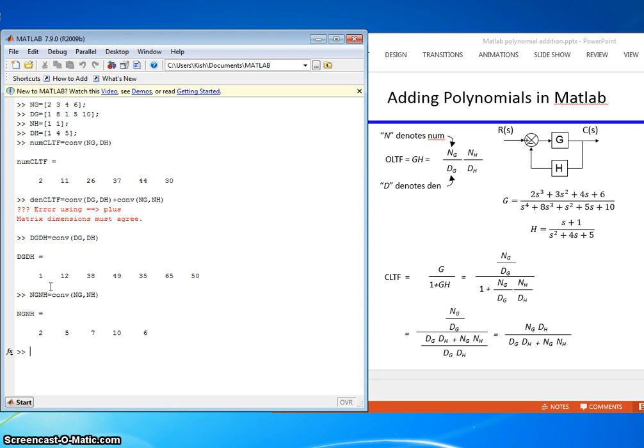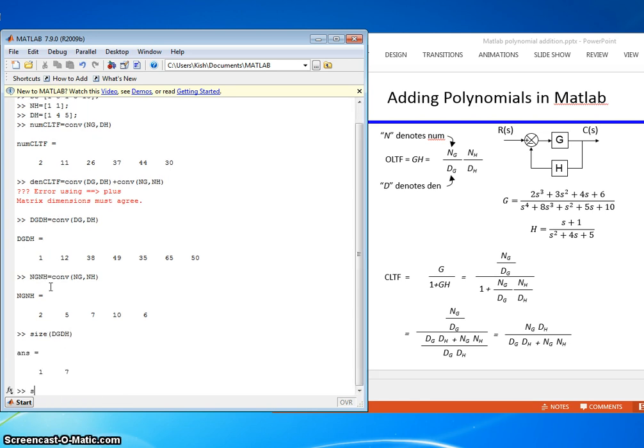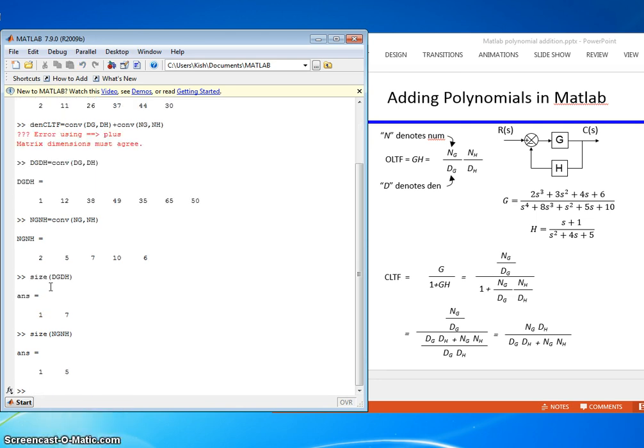If we wanted to know the actual size, there's a command called size in MATLAB. You just type size and the vector you want to see the size of. So, dg dh, that's 1 by 7. Size of Ng Nh is 1 by 5.